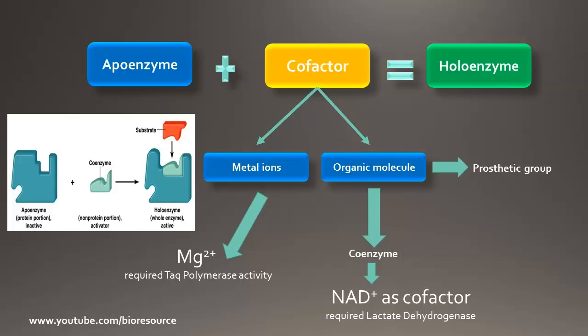An enzyme without its cofactor is called an apoenzyme, and the complete catalytically active enzyme is called a holoenzyme. So apoenzyme plus a cofactor together forms a holoenzyme.